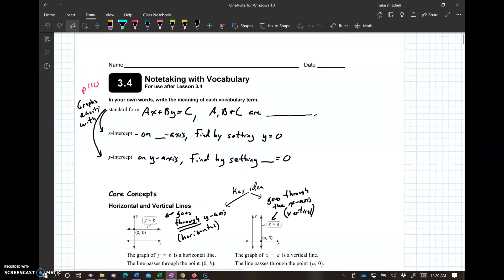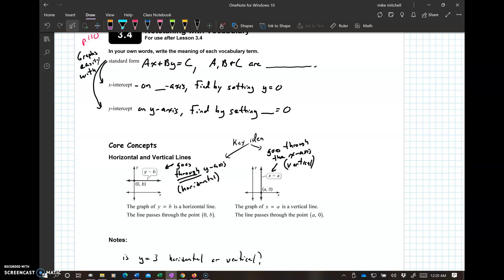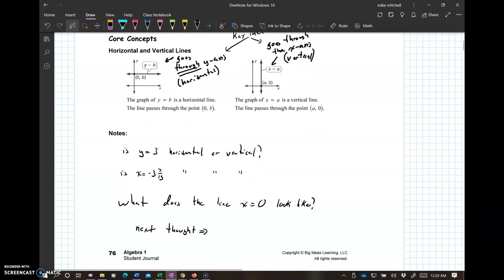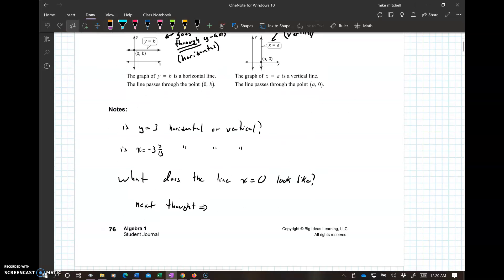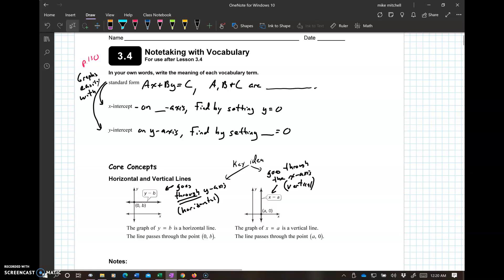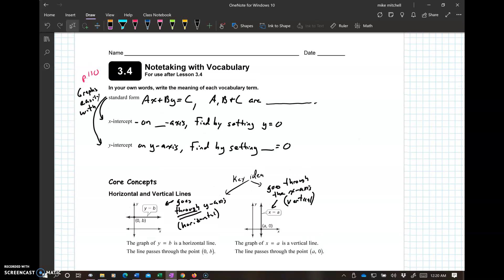Welcome to Algebra 1 Journal 3.4, graphing standard form. Equations in standard form, also horizontal and vertical lines, starts on page 76 in your journal. Let's rumble here. This one's going to be a quick one, I think.